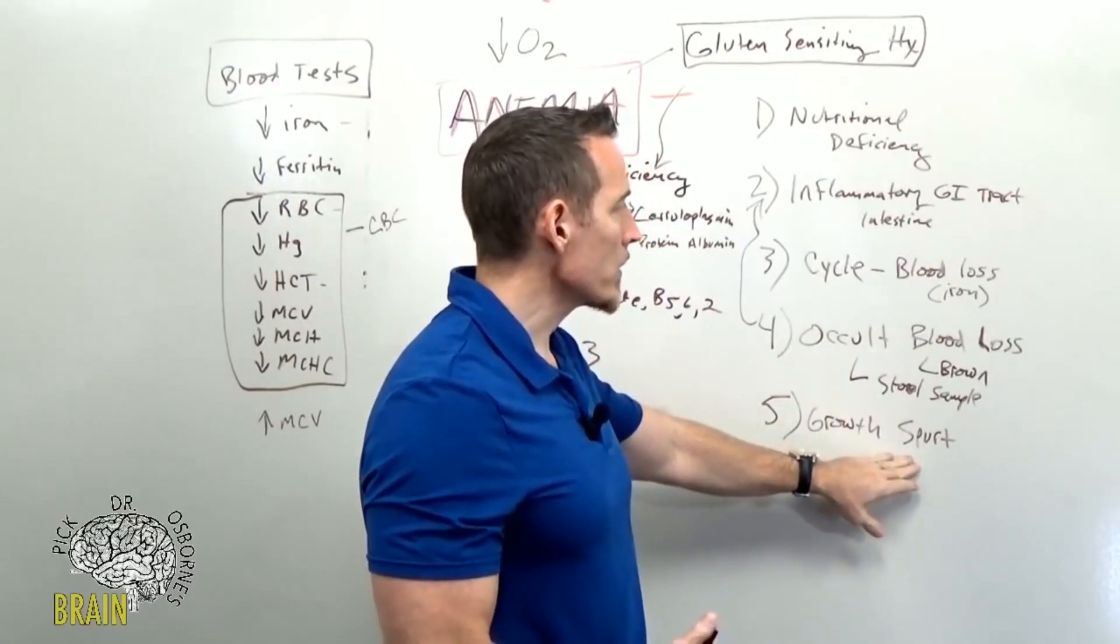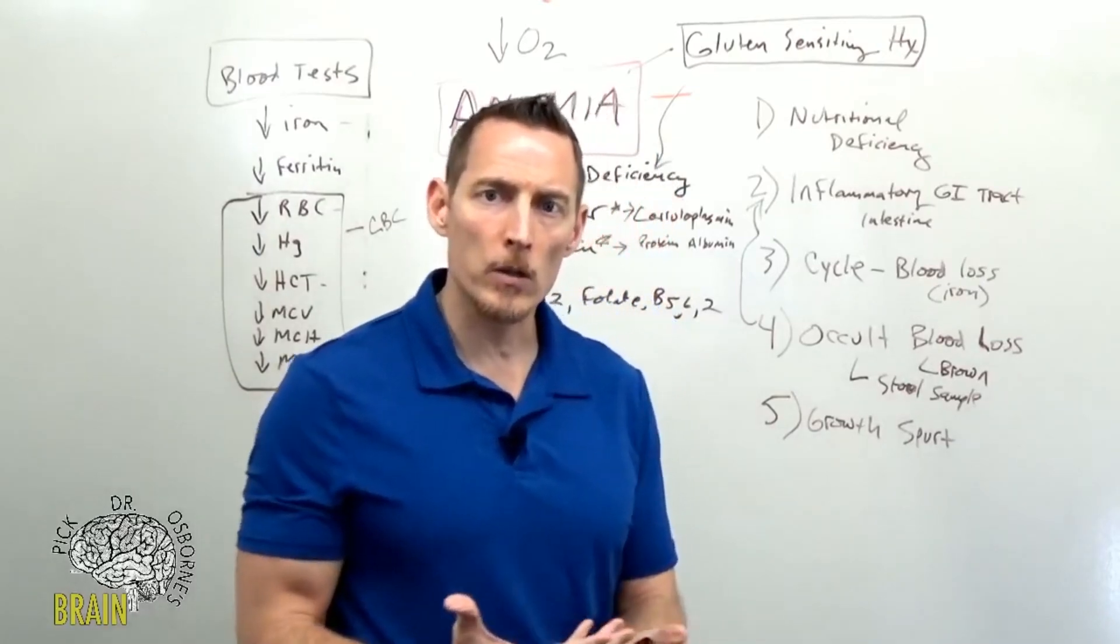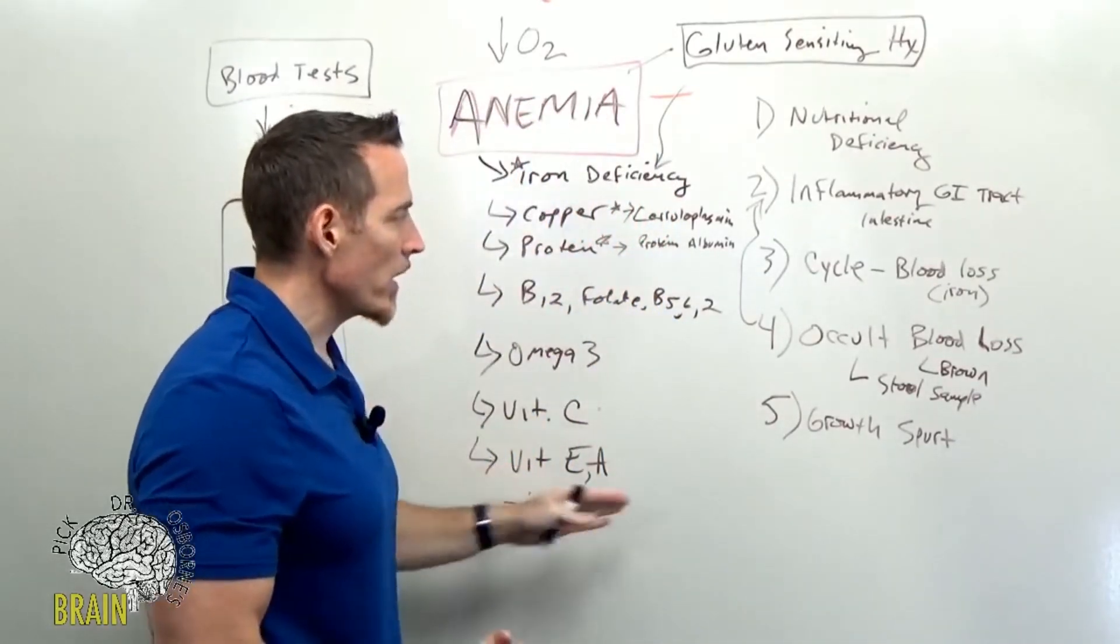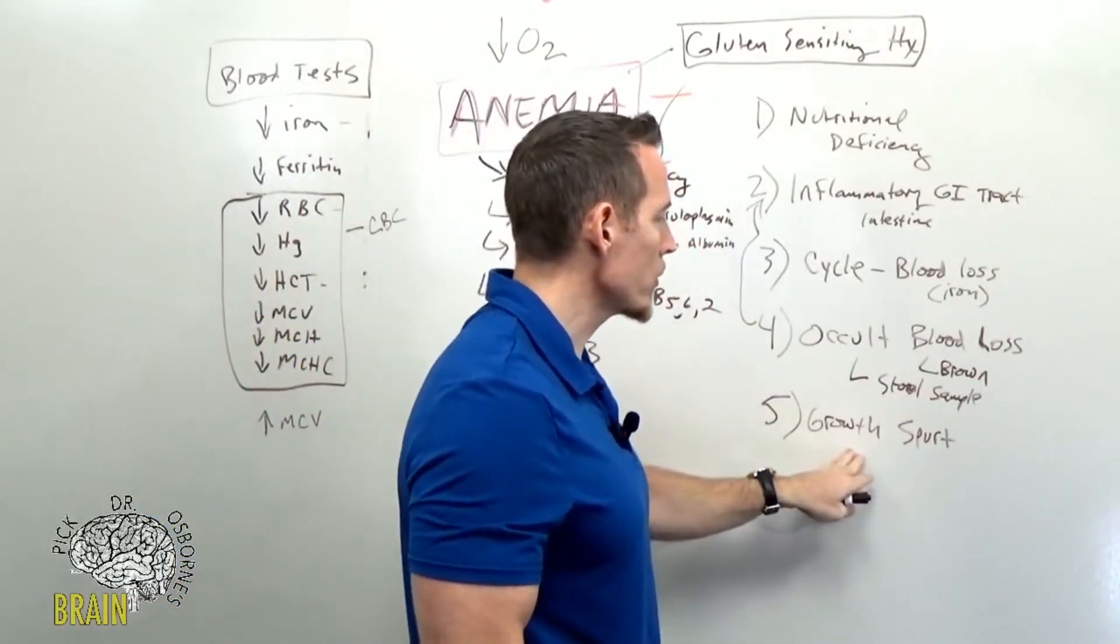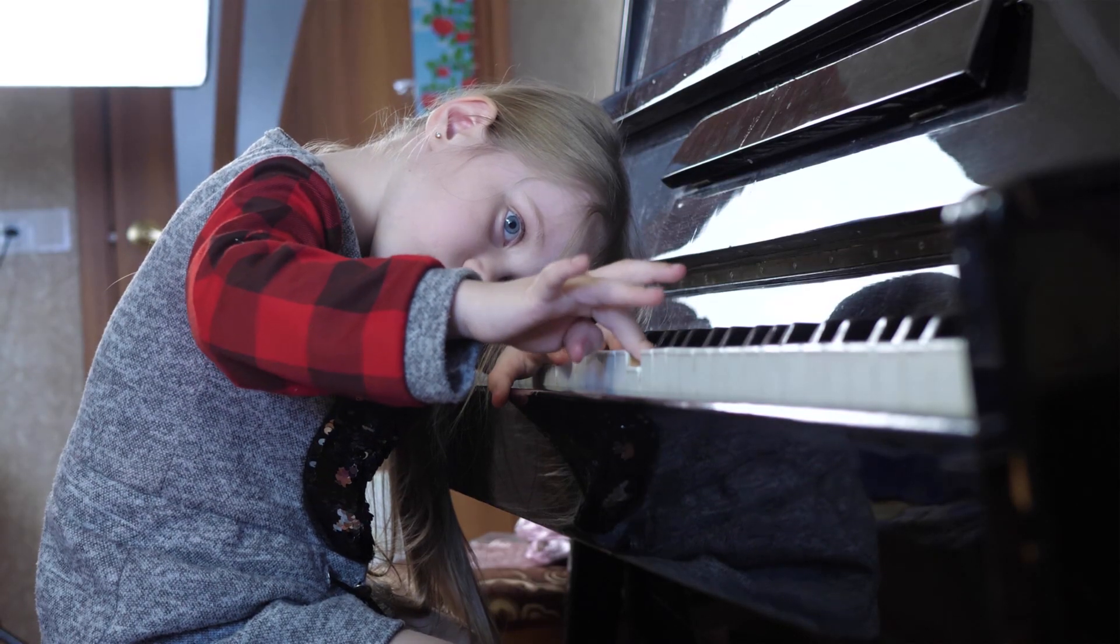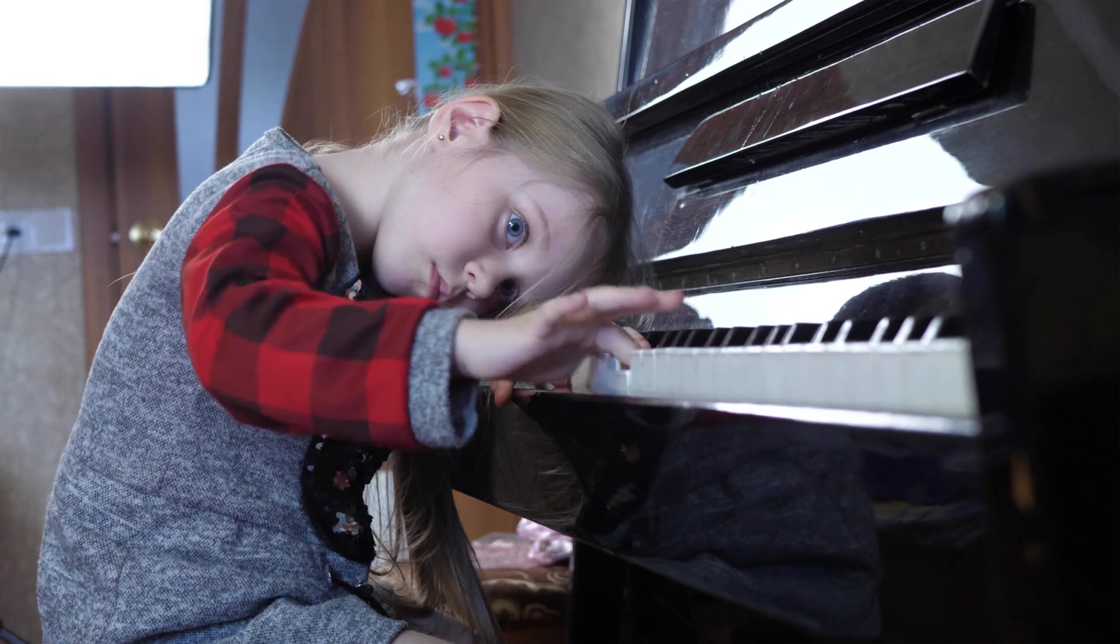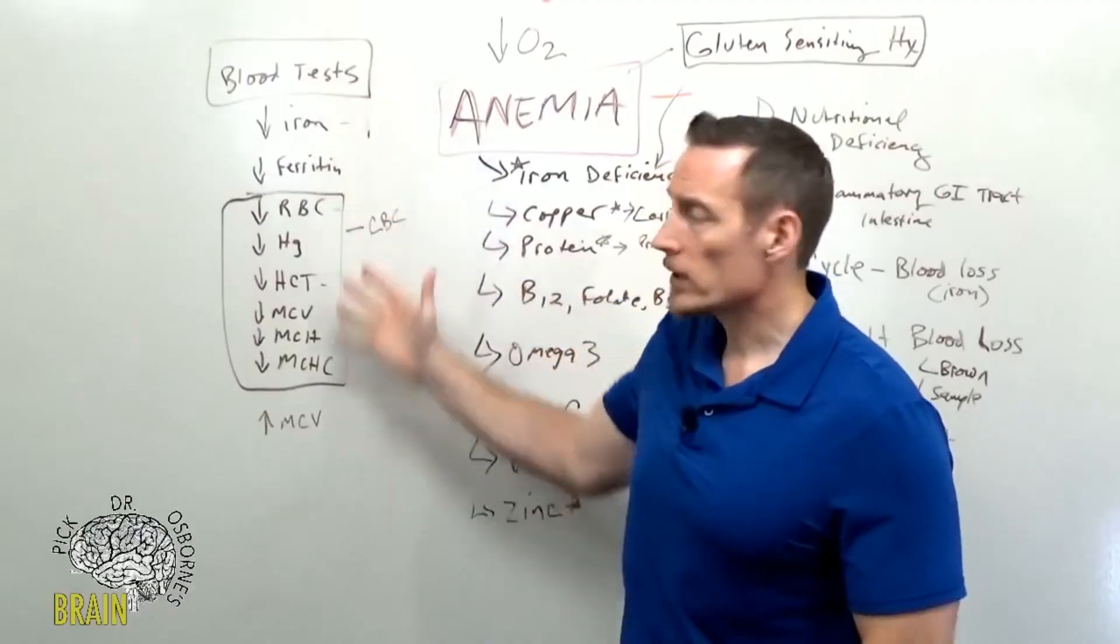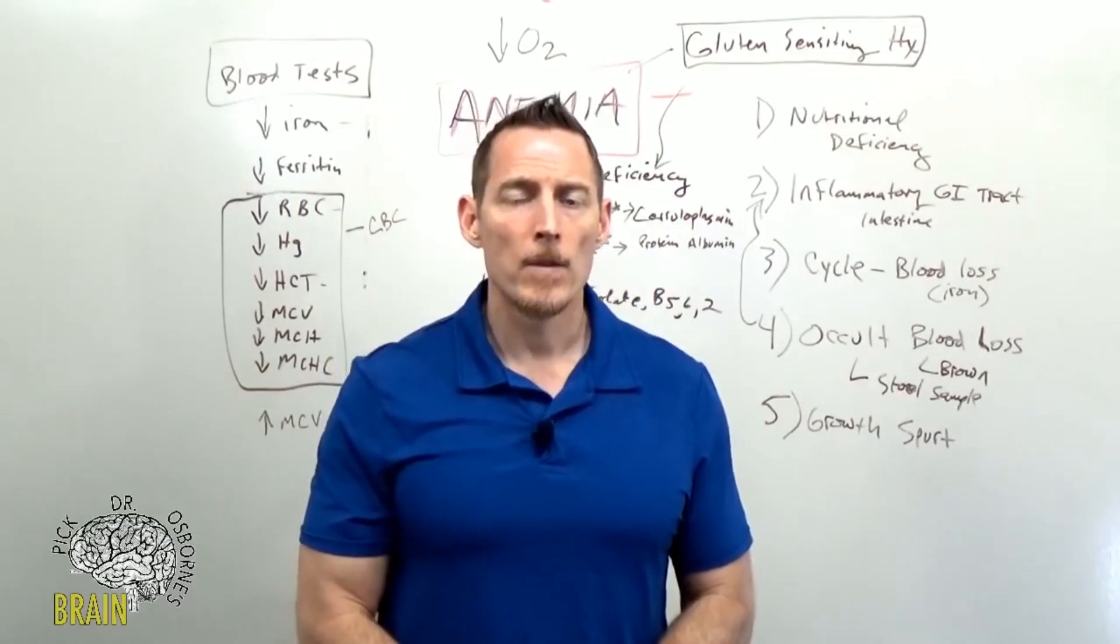Those growth spurts can lead to transient anemias because their body is requisitioning nutrients to build new bone and to build new muscle. So we can end up deficient in some of these things during a quick growth spurt. Watch your kids. Your kids should never be lethargic, have brain fog, be fatigued. They should generally feel pretty energetic. If you start to see in a child any of those symptoms I talked about before, that's a hallmark sign to get some of these things looked at or get some of these things checked—nutritional deficiencies, etc.